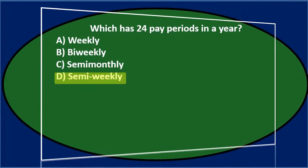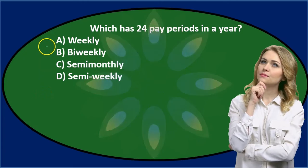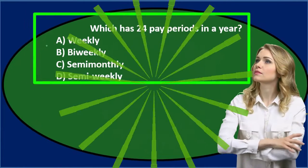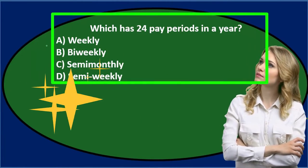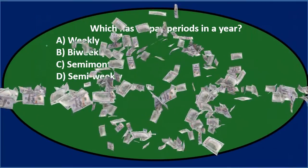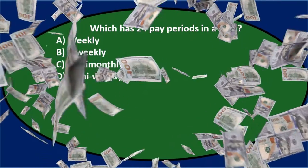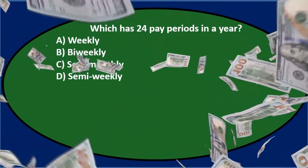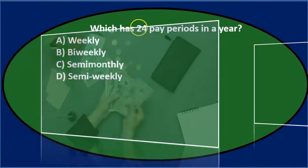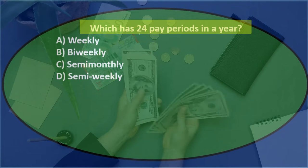Which has 24 pay periods in a year? We'll go through the process of elimination. We're talking about the types of pay periods. Remember, if we are paying employees, we could pay them typically weekly, monthly, bi-weekly, or semi-monthly. We're going to go through which of those would result in 24 pay periods in a year.